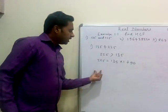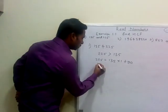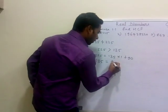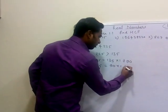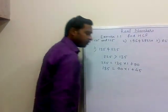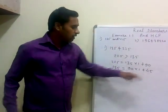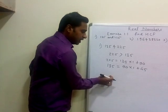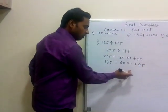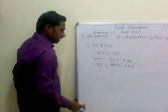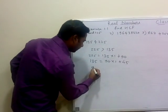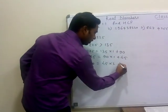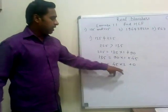Now I take this 135 here. So 135 = 90 × 1 + 45. The remainder is 45. Now my previous divisor becomes the new dividend, and the previous remainder becomes the new divisor. So 90 = 45 × 2, and the remainder is 0.